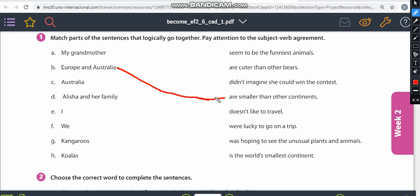So letter C. Australia, singular form, third person. Let's take a look. Doesn't like to travel. We're lucky to go on a trip. Was hoping to see the unusual plants and animals. Is the world's smallest country. So Australia is the world's smallest country. Continent, sorry. Right, second one is done.